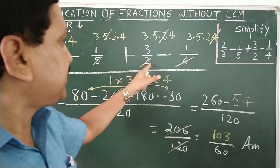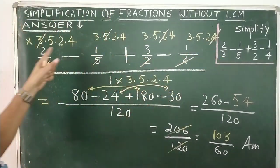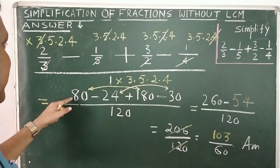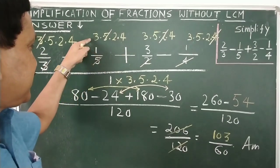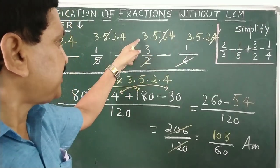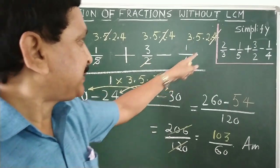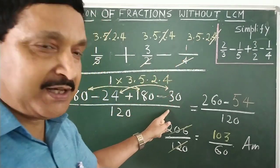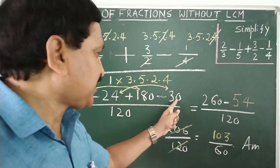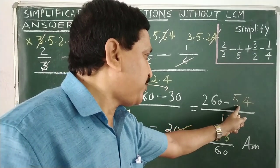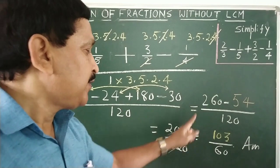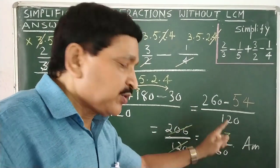Then 3 and 3 cancel, 5 and 5 cancel, 2 and 2 cancel, 4 and 4 cancel. And just see the simplification: the values work out — 20, 60, 180 on the positive side, and 10, 30 giving negatives. Both positive numbers are added to make 260, both negative numbers are combined to make 54. When you subtract, you get 206 by 120, then cancel by 2. This is your final answer: 103 by 60.